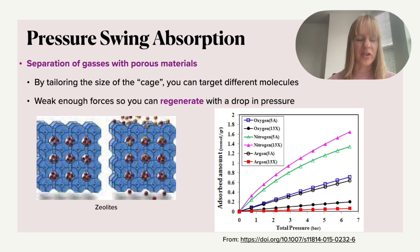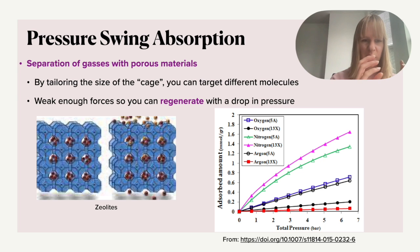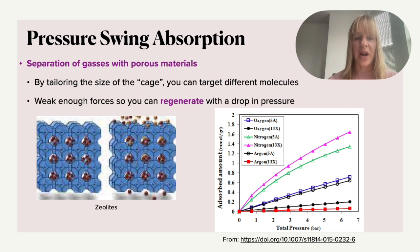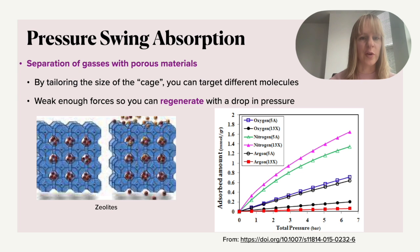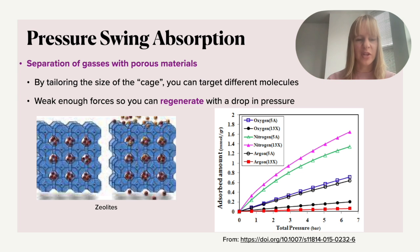Pressure swing adsorption (PSA) is very commonly used, utilizing porous materials such as zeolites that have very specific porosities and sizes to incorporate different molecules. The forces that bind these molecules need to be weak enough for you to regenerate the system. You can also use a thermal swing or other approaches — imagine something like a sponge that takes up gases and releases them with a change in circumstances, and you can keep repeating that process.